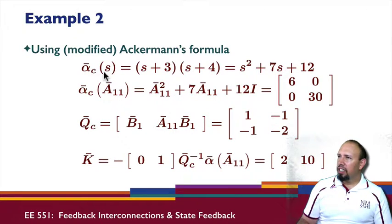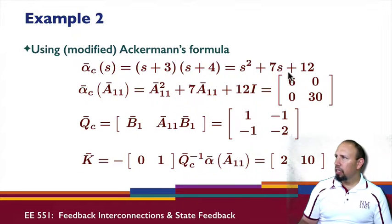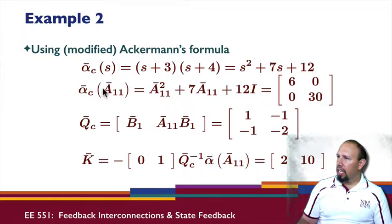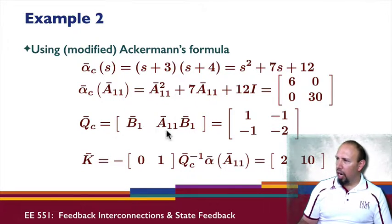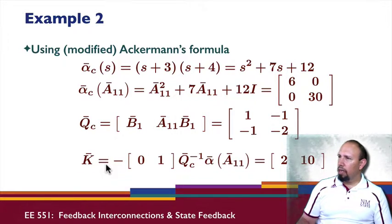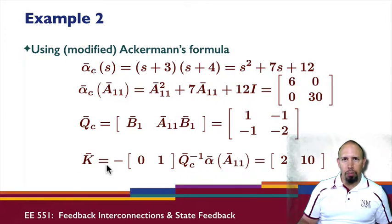If I plug in A11 bar into this polynomial, this is the matrix I get. Qc for the A11 B1 bar is this quantity, which is invertible. So I can obtain K bar using Ackerman's formula. This is the controllable portion of my system. I'm basically coming up with a state feedback gain for the controllable portion of my system.